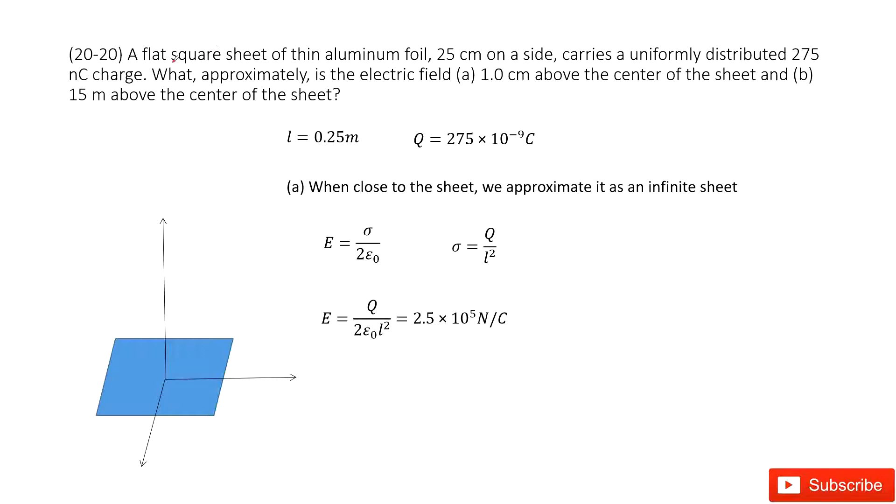So we have a flat square sheet. We can see it looks like this one. The charge is uniformly distributed. We know the side length for this square, L, and the total charge is 275 nanocoulombs. We need to find the electric field. The first one is 1 centimeter above the center of the sheet.